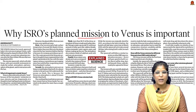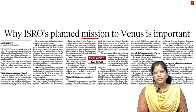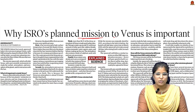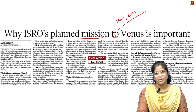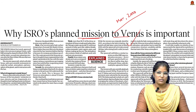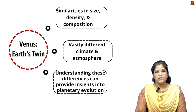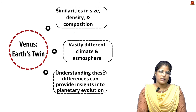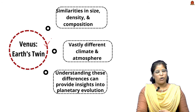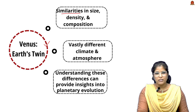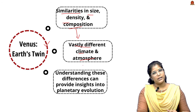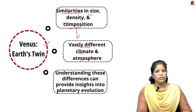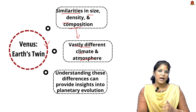The second news article is about ISRO's planned mission to Venus, launching in March 2028. Venus is considered Earth's twin because it has a similar size, density, and composition, but has a very different climate and atmosphere. Understanding what led to the deterioration of Venus's atmosphere helps us understand planetary evolution.